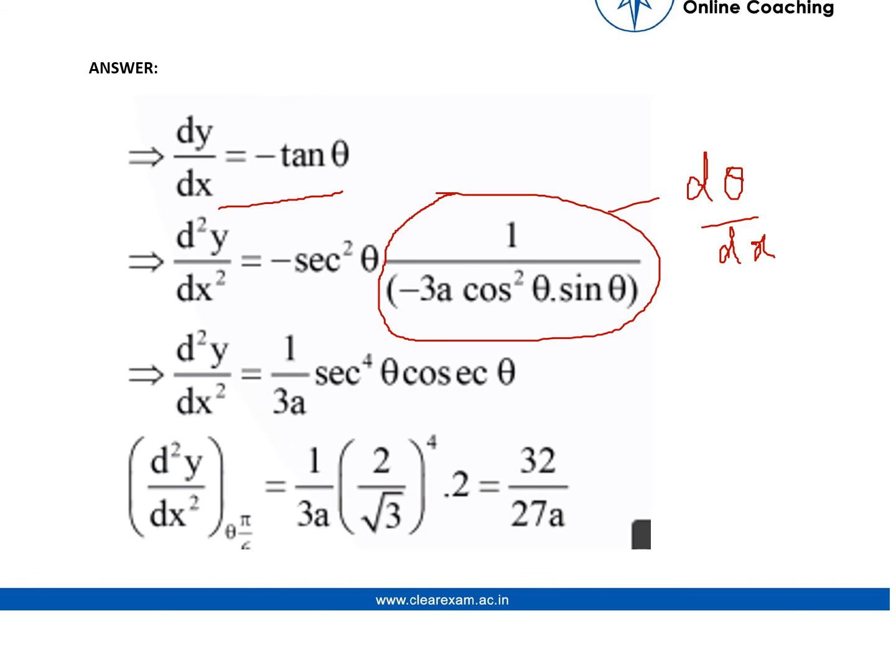We are getting minus sec squared theta times this whole term, and this is nothing but actually dθ over dx. Upon simplification we got this term. Now we are supposed to find out this whole term at theta equals π by 6. So we will place the value of theta equals π by 6 and we will get this value, which is 32 over 27a.